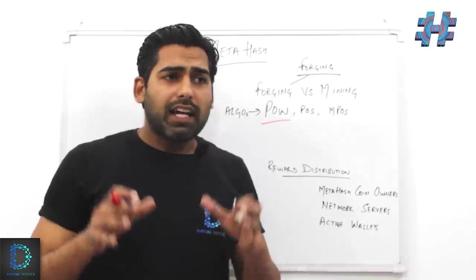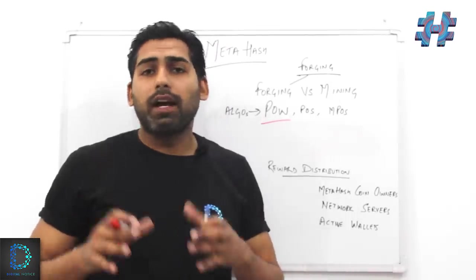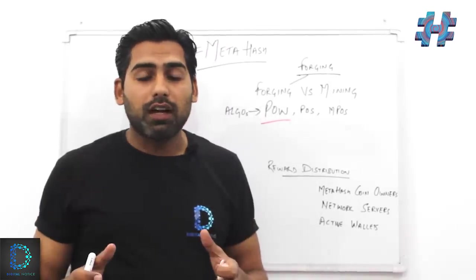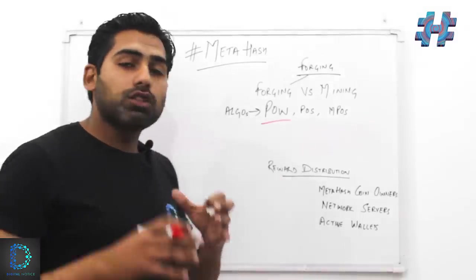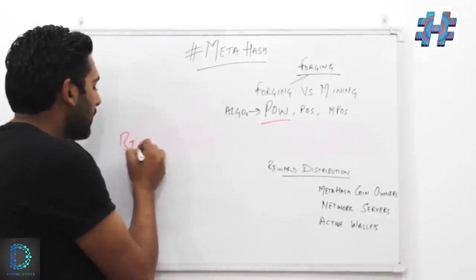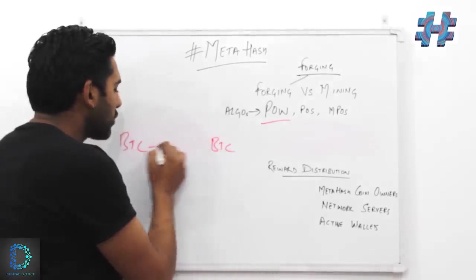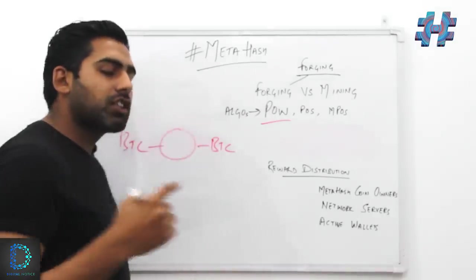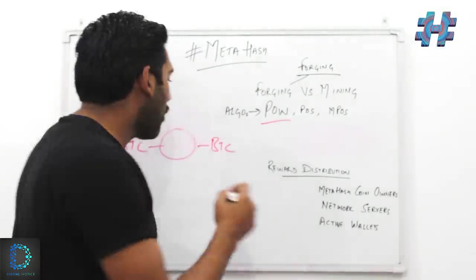Back then, proof-of-work used to be one of the most popular consensus algorithms. It is still being used by a number of cryptocurrencies in the market right now, but back then it used to be one of the most popular. We know the condition in BTC when a transaction was to take place—that transaction was to be verified and these so-called miners were responsible for verifying these transactions.